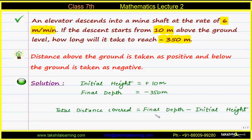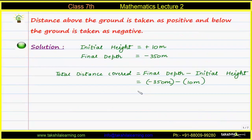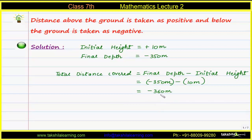The total distance covered will be final depth minus initial height. So: minus 350 meters minus 10 meters, which equals minus 360 meters. Since distance cannot be negative, we take the positive value. Therefore, the total distance covered is 360 meters.